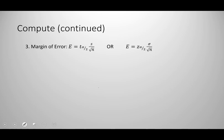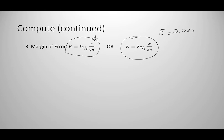Once we have our critical values, we can find our margin of error. The formulas have the same setup — it's a matter of whether you use the t distribution or the z distribution. Using the t distribution for our example, I take the critical t value of 2.023 and multiply by the sample standard deviation of 0.4, divided by the square root of the sample size, which is the square root of 40. That computation gives a margin of error equal to 0.128.